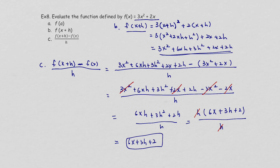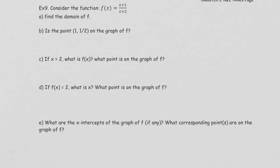So when asked to compute [f(x+h) - f(x)] / h, find f(x+h) first — as done in part b — subtract f(x), divide by h, and then simplify. That is the full process for the difference quotient.